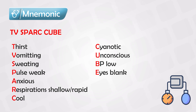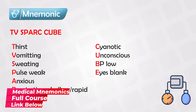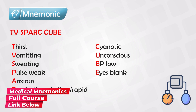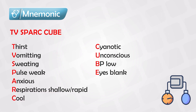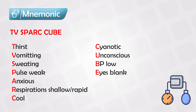The pulse will be weak as the heart will be under huge stress. The patient will be anxious, and the respiration will be shallow and rapid — the patient takes rapid breaths but each breath is lower in volume. The more anxious they are, the faster the respiratory rate.